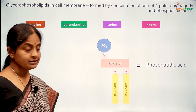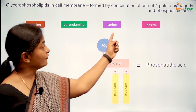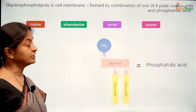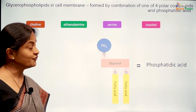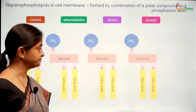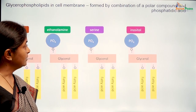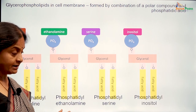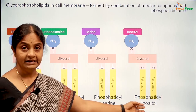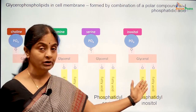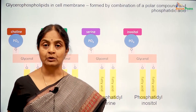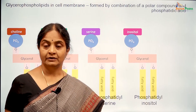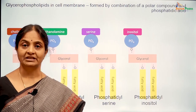Phosphatidic acid in turn combines with any one of four polar compounds: choline, ethanolamine, serine, or inositol to form a phospholipid. So we have phosphatidylcholine, phosphatidylethanolamine, phosphatidylserine and phosphatidylinositol. These are the four glycerophospholipids which make up the cell membrane and form the predominant phospholipids of the cell membrane.